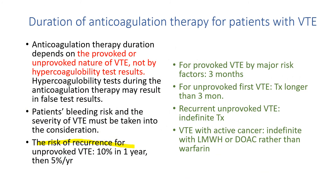The risk of recurrence for unprovoked venous thromboembolism is 10% per year, which is quite high. For unprovoked first VTE, treatment must be at least three months or even longer. For provoked VTE by a major risk factor, three months is sufficient. When a patient has recurrent unprovoked VTE, indefinite therapy must be considered. When cancer patients develop VTE, indefinite therapy with low molecular weight heparin or direct oral anticoagulants—rather than warfarin—is recommended because warfarin is not very effective for patients with cancer. The anticoagulation therapy duration depends on the provoked or unprovoked nature of VTE, not on hypercoagulability test results.